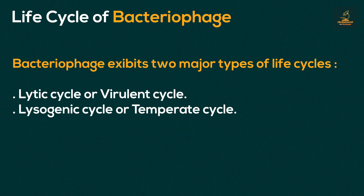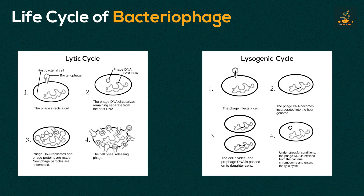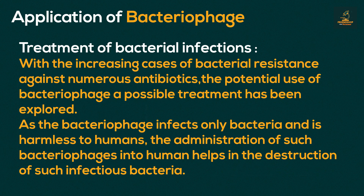The bacteriophage exhibits two major types of life cycles: the lytic cycle and the lysogenic cycle. In the lytic cycle, a bacteriophage infects a bacteria and kills it to release viruses. In the lysogenic cycle, the viral DNA gets integrated into the host DNA but viral genes are not expressed. The prophage is passed on to daughter cells during every cell division. After some time, the prophage leaves the bacterial DNA and goes through the lytic cycle, creating more viruses.